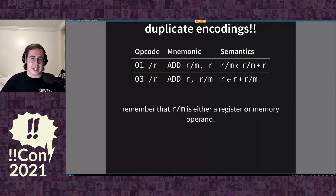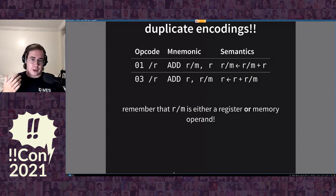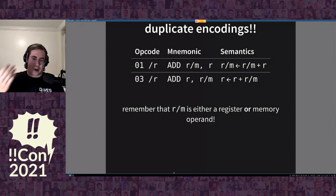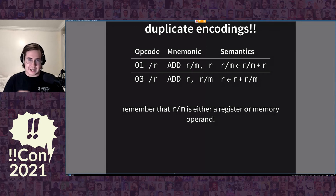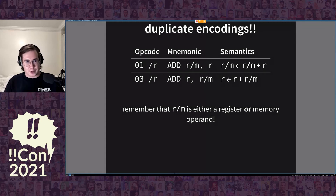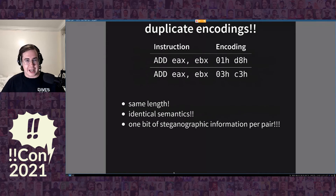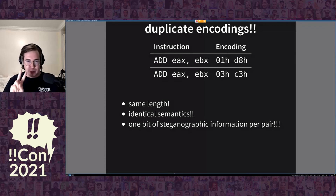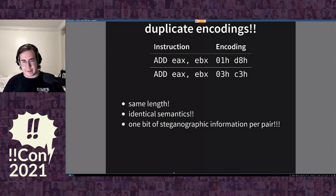If you look at x86's opcode tables — these ones are from the Intel Software Development Manual — you'll see at least two different variants for many opcodes: an ADD r/m,r variant or an ADD r,r/m variant. These two have identical semantics when used in register-register mode, but different semantics based on the direction bit when used in register-memory or memory-register mode. What you'll see is two encodings that have the same length — both 0x01 or 0x03 followed by the ModRM byte — so they're both two bytes long. They have identical semantics: both are add, both have the same flags operations, the same timing behavior. But we can select between them for one bit of steganographic information.